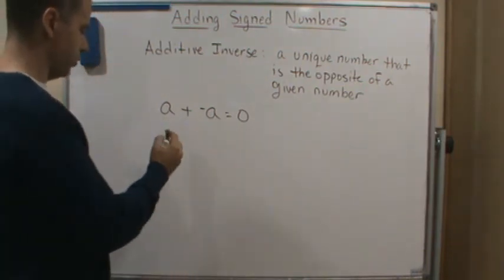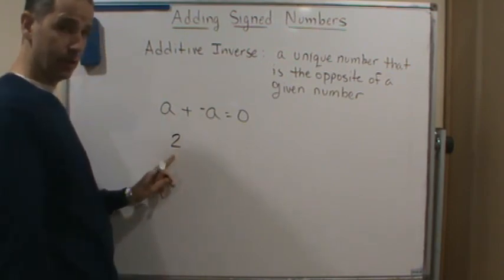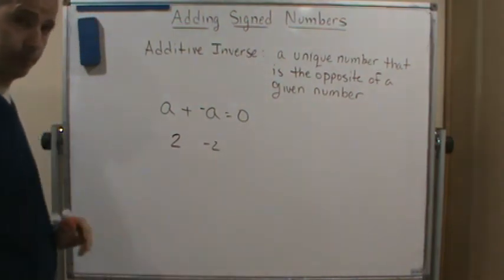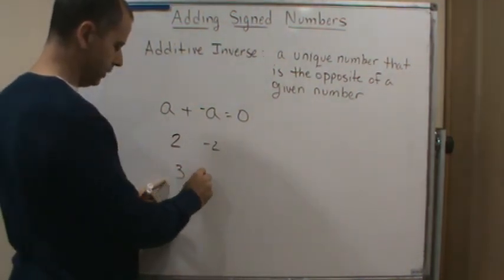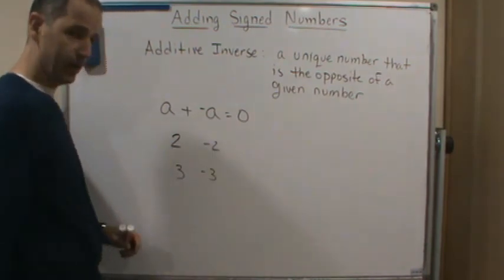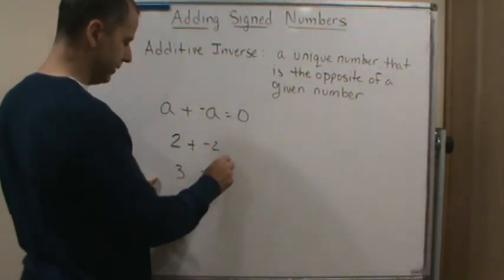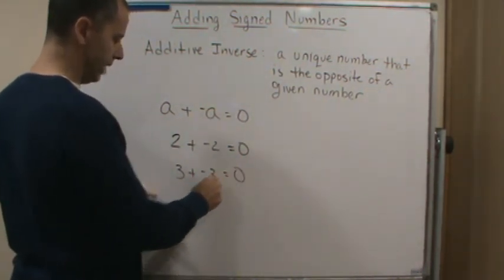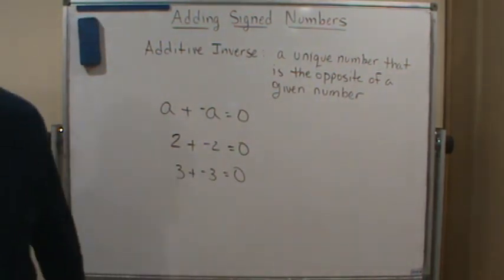And so those are the additive inverse. So if I give you two, the additive inverse of two is negative two. If I give you three, then the additive inverse is negative three. Why? Because if I add these, I get zero. If I add these, I get zero. And that's it. Take care.